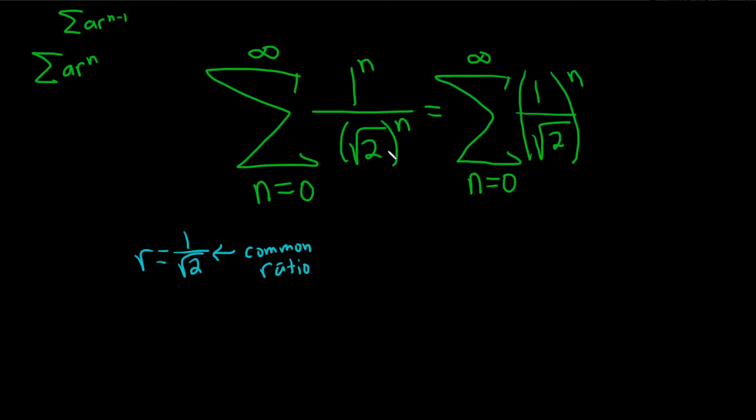So now we can use something called the geometric series test, which I'll abbreviate with three letters GST. Geometric series test says if the absolute value of r is less than 1, then your series converges.